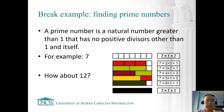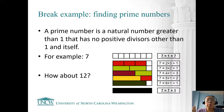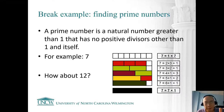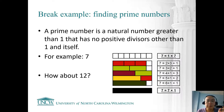A good use case is validating a prime number. By definition, a prime number is a natural number greater than 1 with no positive divisors other than 1 and itself. For example, 7 — between 1 and 7, the numbers 2, 3, 4, 5, 6 cannot evenly divide 7. So we can say 7 is a prime number.